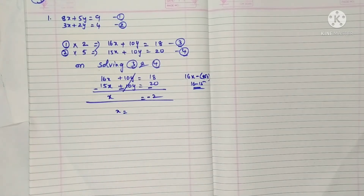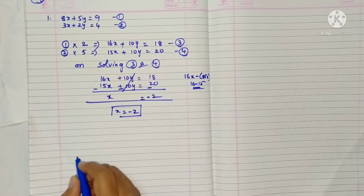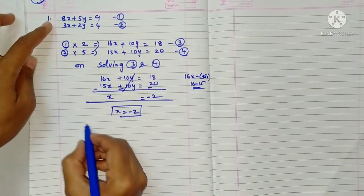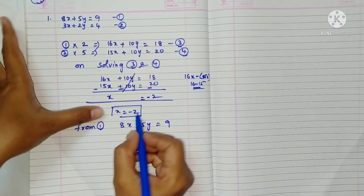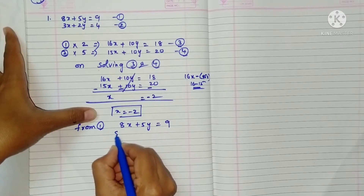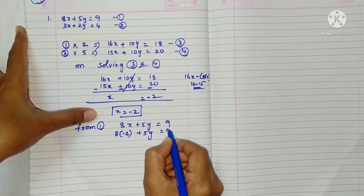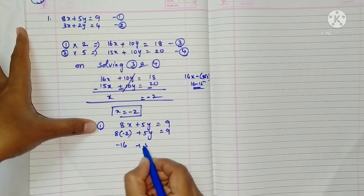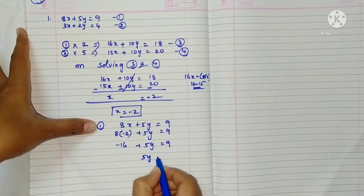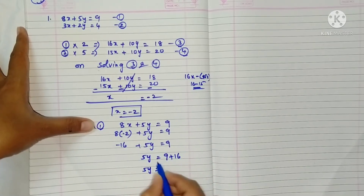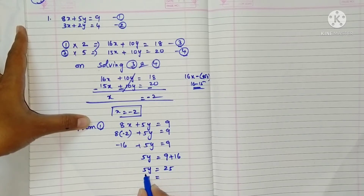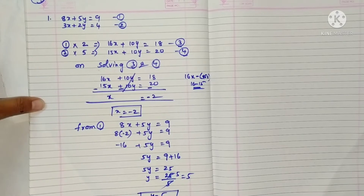So x is equal to minus 2. Now take equation one: 8x plus 5y equals 9. Substituting x equals minus 2: 8 into minus 2 is minus 16, so 5y equals 9 plus 16 equals 25. Therefore y equals 25 divided by 5, which gives y equals 5. So x equals minus 2 and y equals 5 are the solutions.